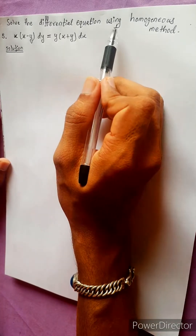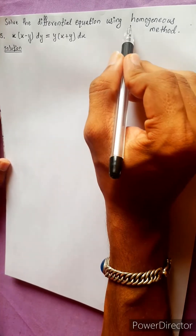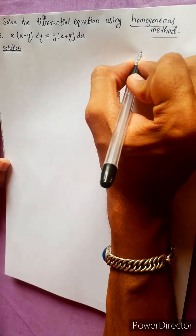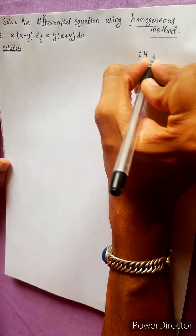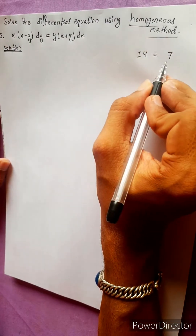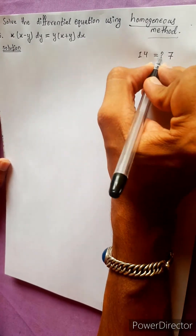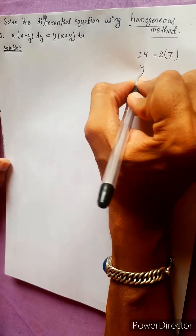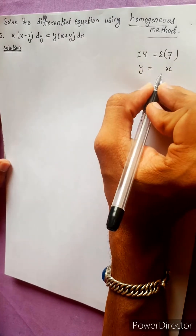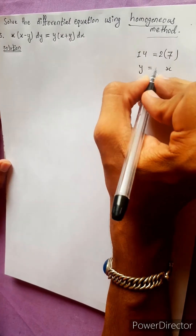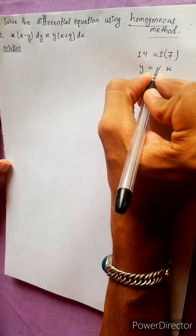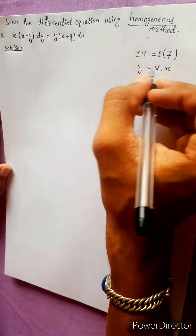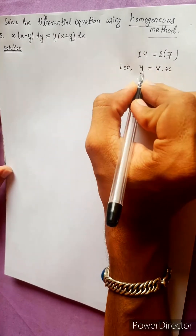Solve the following differential equation using the homogeneous method. Suppose dy/dx equals to some expression. This means it is equal to x. Suppose we multiply the constant quantity by x.